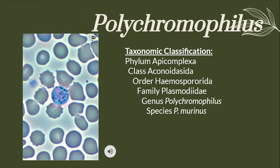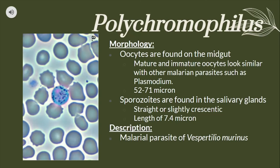Here we will see the taxonomic classification for Polychromophilus. Polychromophilus oocytes are found on the midgut. Mature and immature oocytes look similar to other malarial parasites such as Plasmodium, as previously discussed, and the size usually ranges from 52 to 71 microns. Its sporozoites are found in the salivary glands and usually look straight or slightly crescentic, with a length of 7.4 microns. Polychromophilus are malarial parasites of Vespertilio murinus, a specific species of bats.